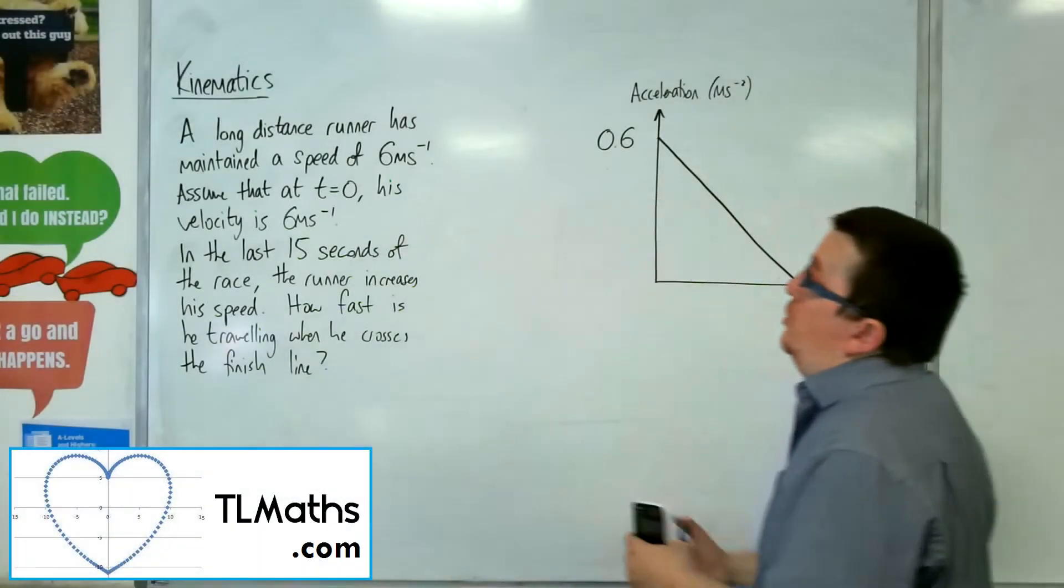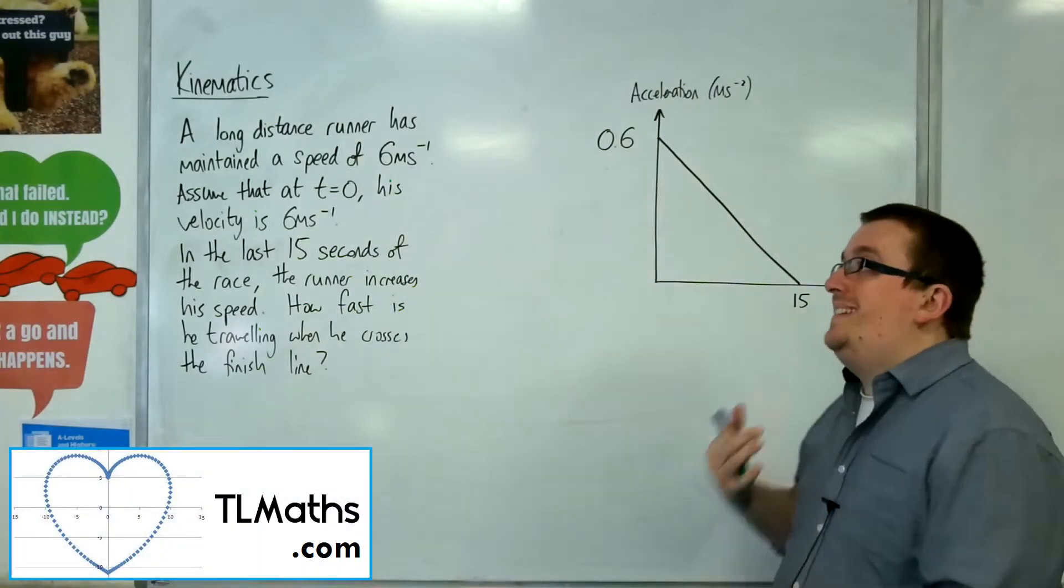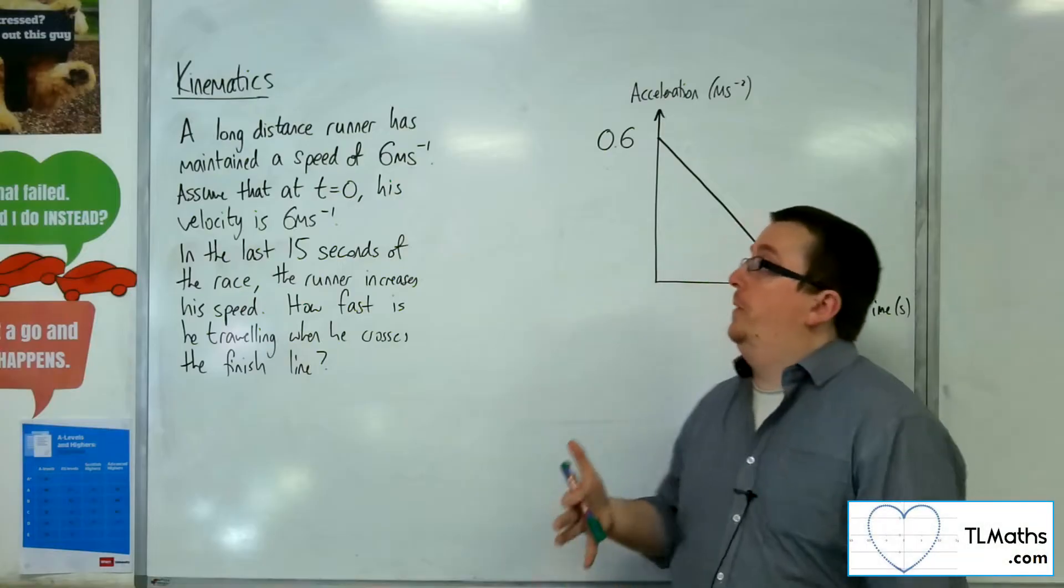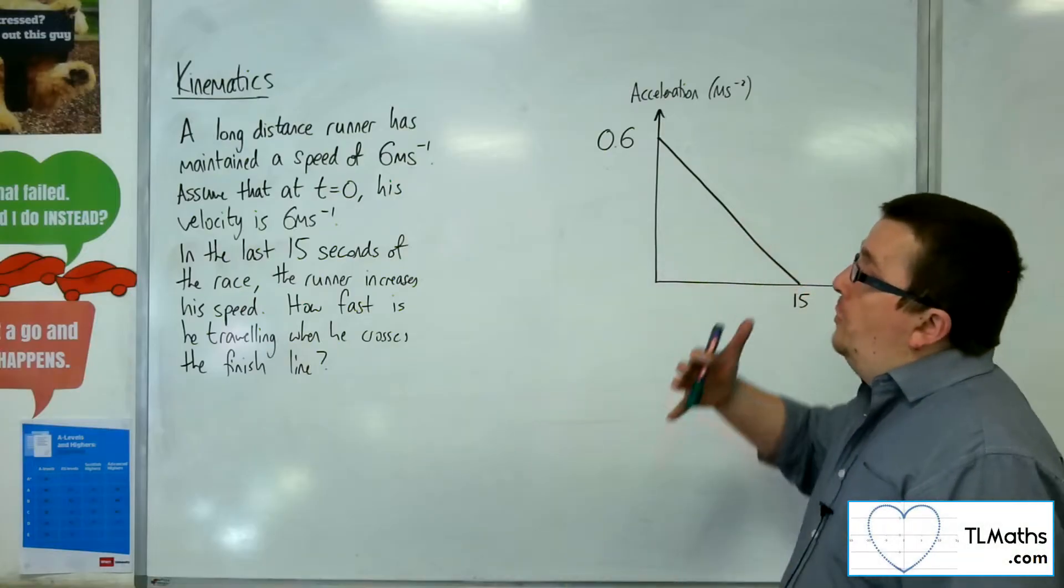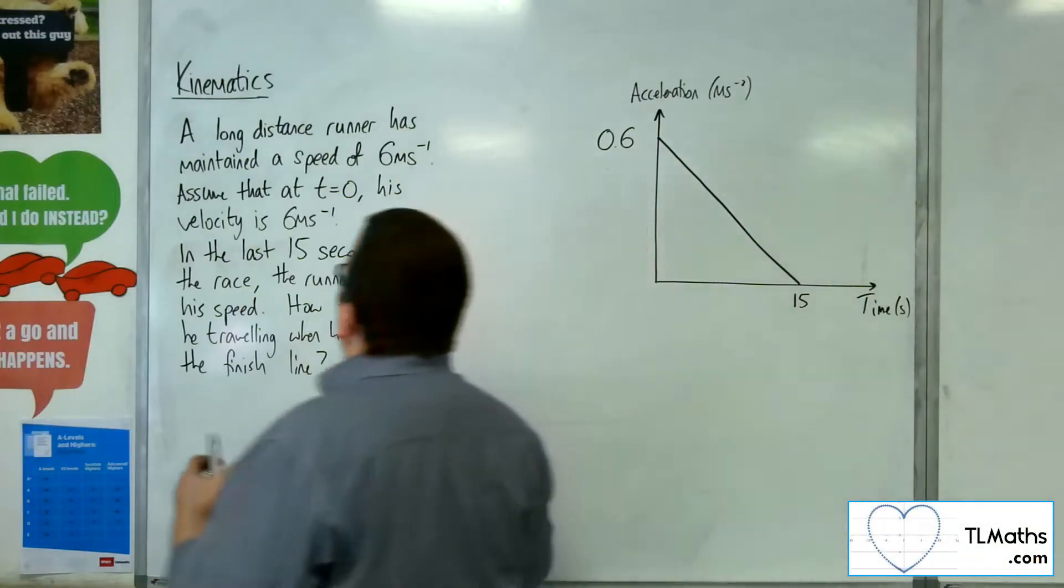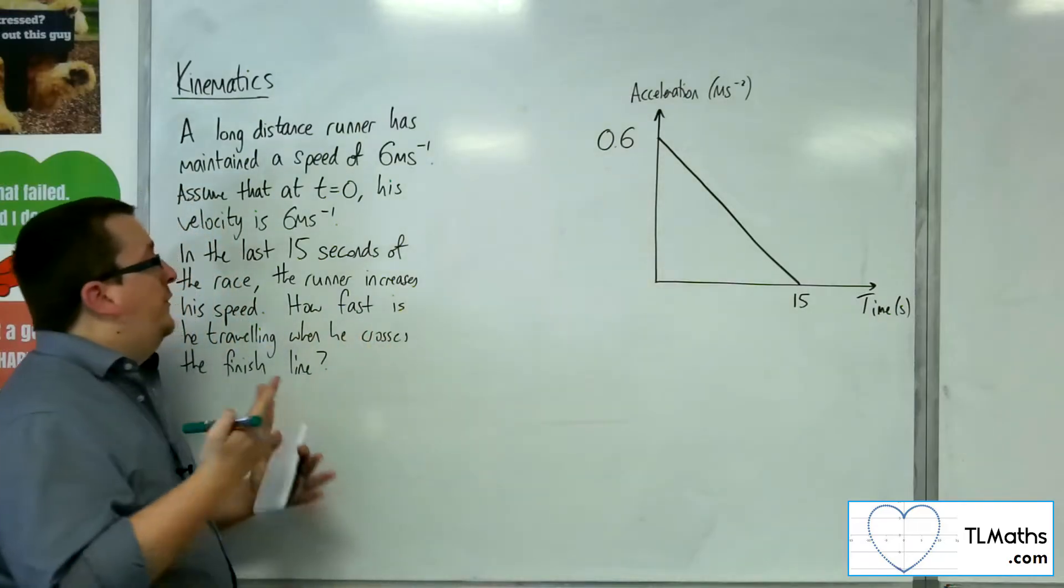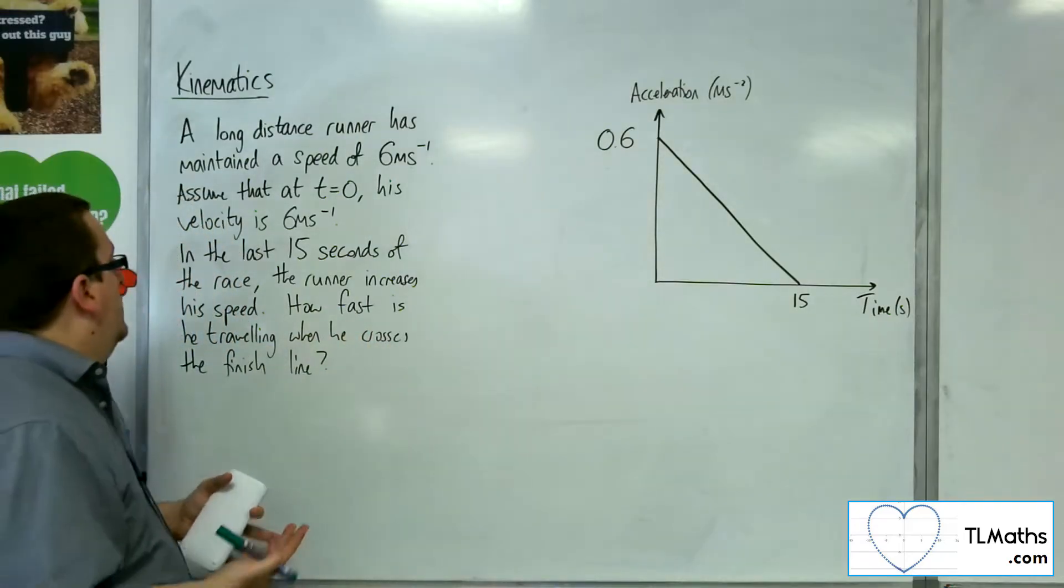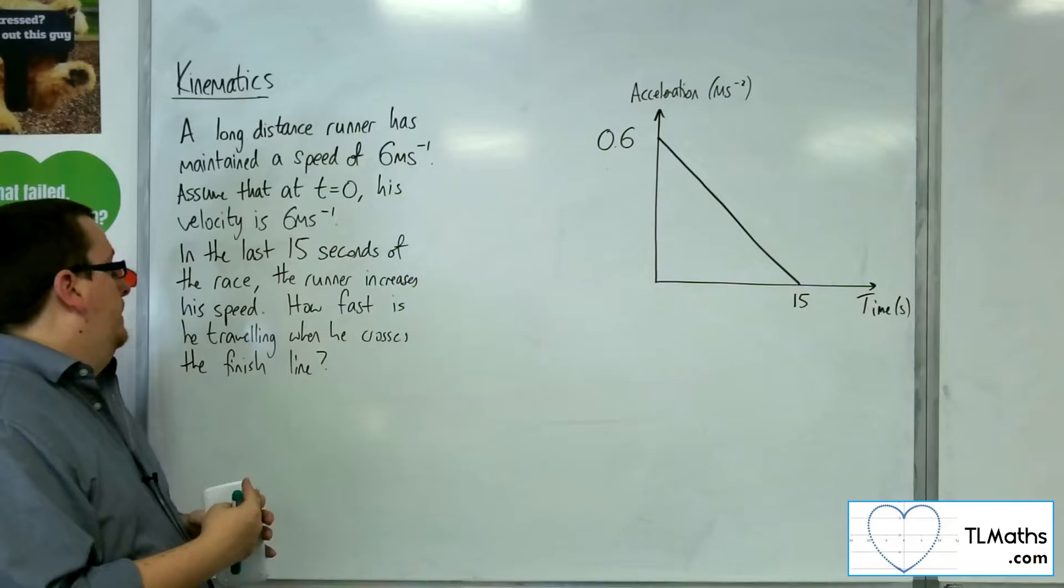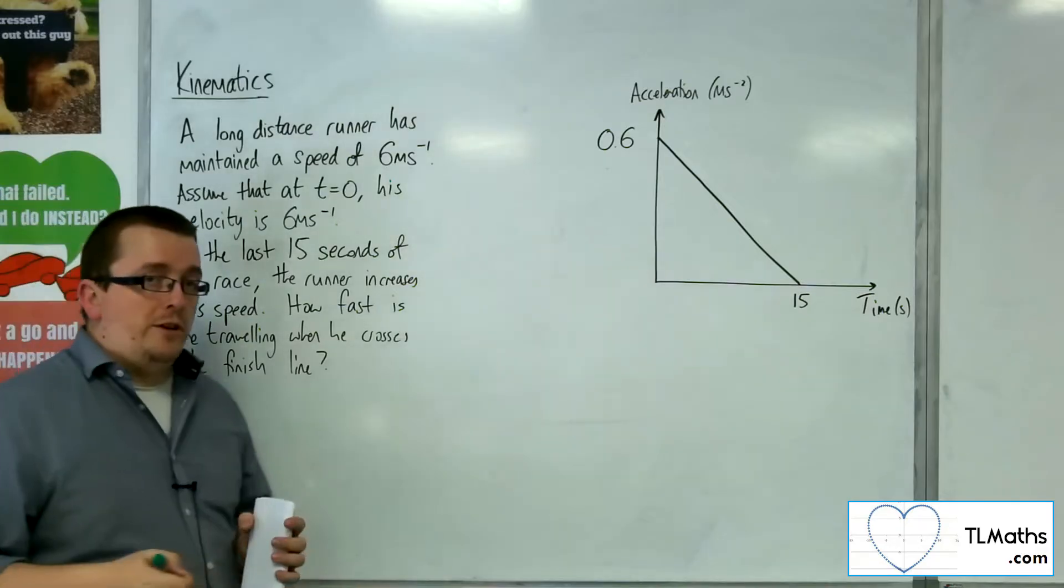So in this video, we've got a long-distance runner who's been maintaining a speed of 6 metres per second. So then, in the last 15 seconds of the race, the runner increases his speed. How fast is he travelling when he crosses the finish line?